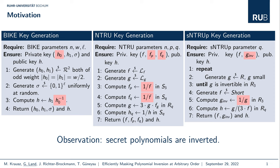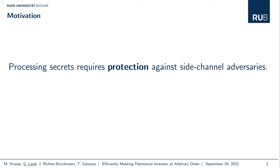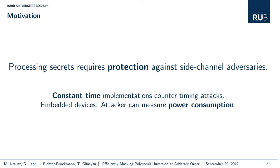Overall, the observation is that secret polynomials are inverted during key generation. We also know that processing secrets requires protection against side channel adversaries. Usually we try to implement constant time to counter timing attacks, but for embedded devices an attacker may also be able to measure the power consumption or even the electromagnetic emanation of a device and use this as side channel information.